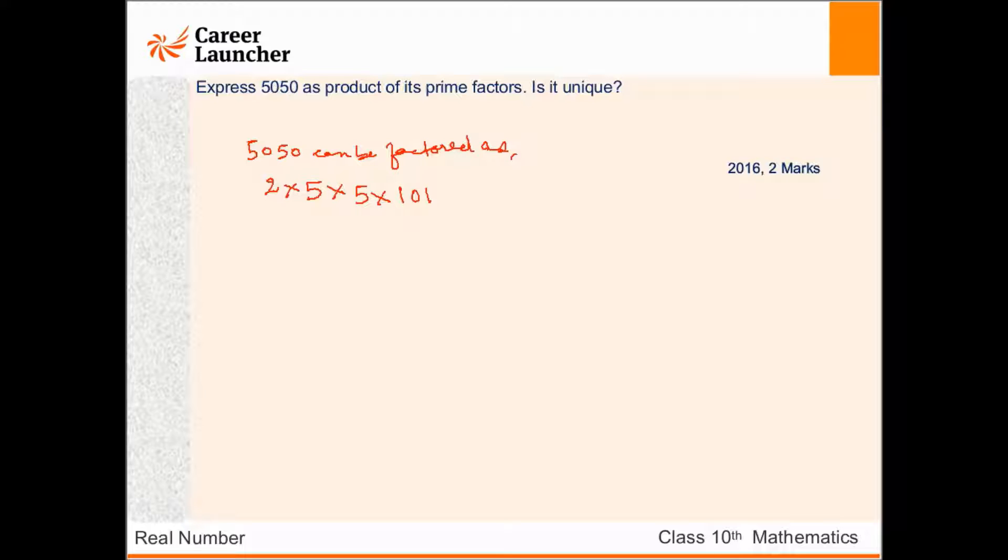101 can that be factored? I don't think 101 can be factored anymore. So basically 5050 can be written as 2 into 5 square, that is 5 to the power 2, into 101.